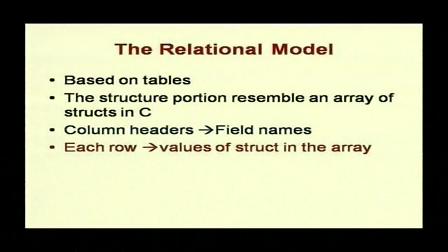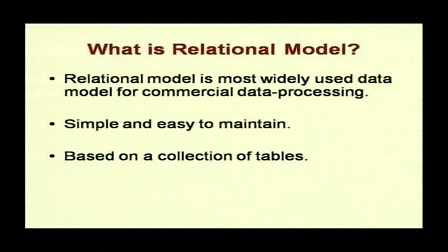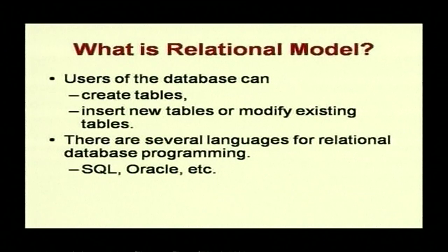The relational model is based on tables. The name for the table is called a relation. The structure resembles an array of structs in C — the column headers are field names and each row contains the values. A relational model is the most widely used data model for commercial data processing, simple and easy to maintain. Users can create tables, insert new tables, or modify existing tables. Several languages for relational database querying, like SQL, are based on facilities for creating, inserting, and modifying tables.